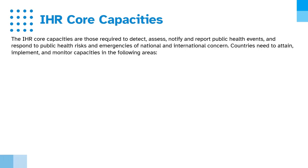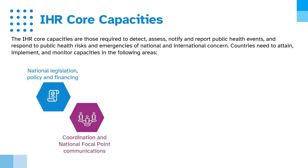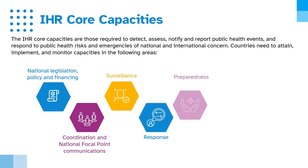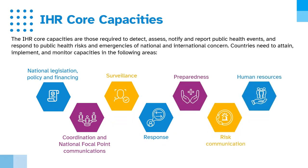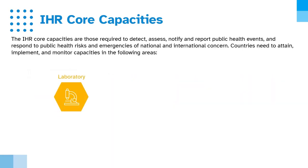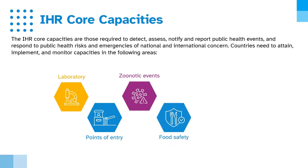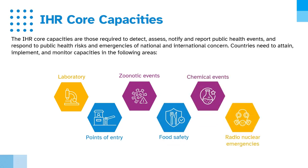Countries need to attain, implement and monitor capacities in the following areas: national legislation, policy and financing; coordination and national focal point communications; surveillance; response; preparedness; risk communication; human resources; laboratory; points of entry; zoonotic events; food safety; chemical events; and radionuclear emergencies.